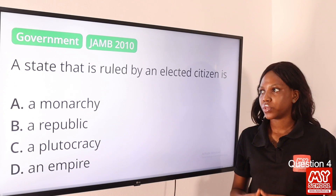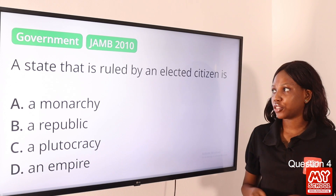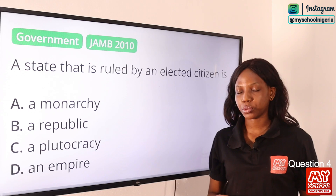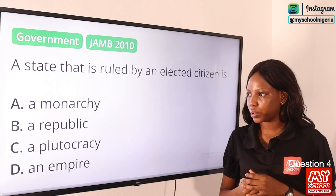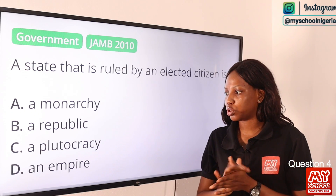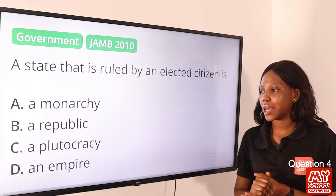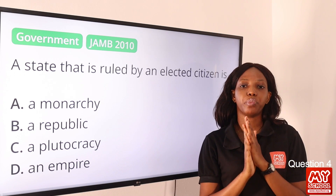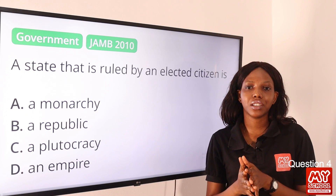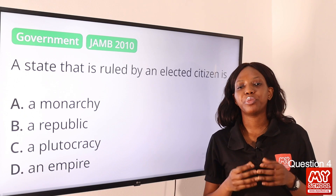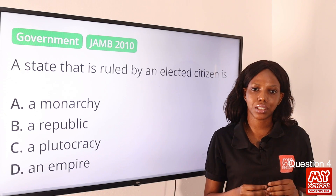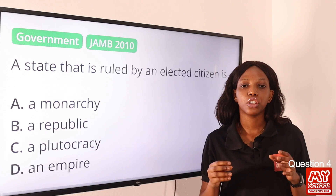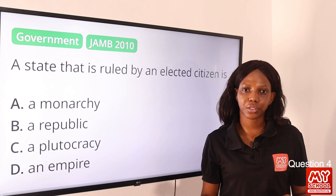Question 4: A state that is ruled by an elected citizen is — option A, a monarchy; option B, a republic; option C, a plutocracy; option D, an empire. The answer is a republic. A republic is a state in which the president is elected by the citizens. So option B is the final answer.